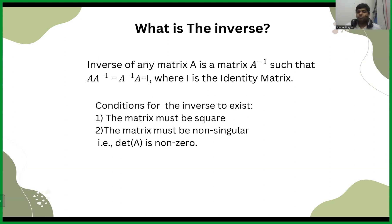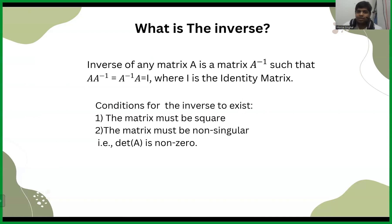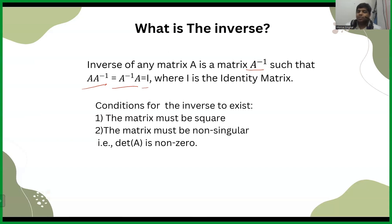Let's first start by defining what is a normal inverse. We have all covered this before 12th grade. The inverse for any matrix A is defined by this symbol, and when we multiply it with the matrix — from either side — it gives us the identity matrix. The conditions for the inverse to exist: first, the matrix must be square; second, the matrix must be non-singular, that is the determinant of A is non-zero.